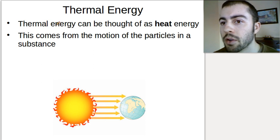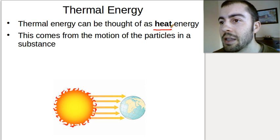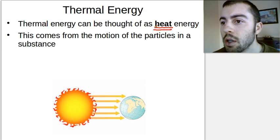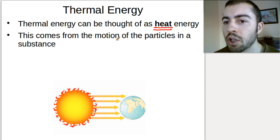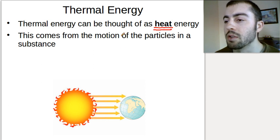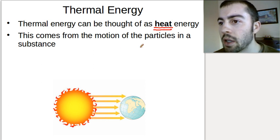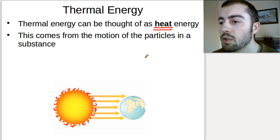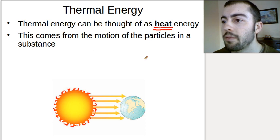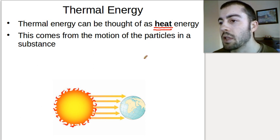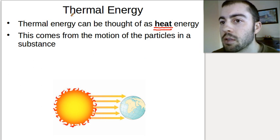Thermal energy is basically heat energy. It comes from the motion of particles in a substance. Something that has a high temperature means the particles are moving really fast inside of it. The more heat energy it has, the faster the particles are going to move, and that gives us more thermal energy.